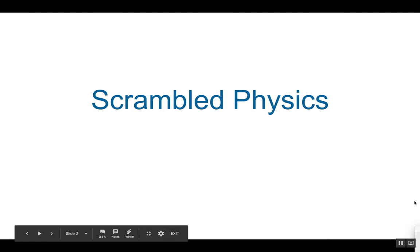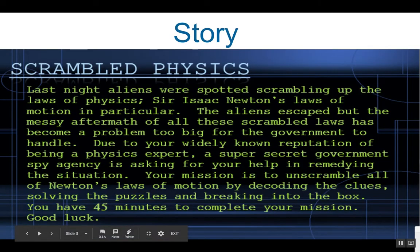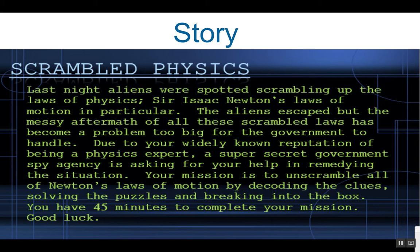Scrambled Physics. Last night, aliens were spotted scrambling the laws of physics — Sir Isaac Newton's laws of motion in particular. The aliens escaped, but the messy aftermath of all these scrambled laws has become a problem too big for the government to handle. Due to your widely known reputation of being a physics expert, a super secret government spy agency is asking for your help in remedying the situation. Your mission is to unscramble all of Newton's laws of motion by decoding the clues, solving the puzzles, and breaking into the box. You have 45 minutes to complete your mission. Good luck!